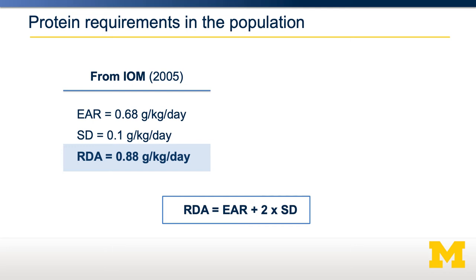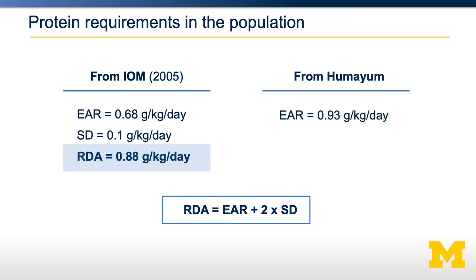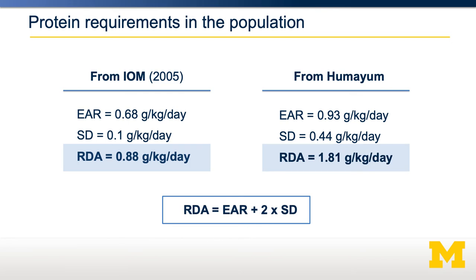However, if we look at the study using the breakpoint, they estimate the EAR to be 0.93 grams per kilogram per day using indirect amino acid oxidation. They also found substantially more variability in individuals' protein requirements — 0.44 grams per kilogram per day. You can see that the RDA would be much higher: 1.8 grams per kilogram per day, more than double the current RDA. But this hasn't been adopted.